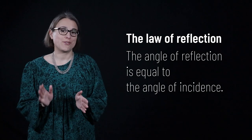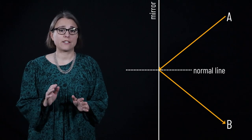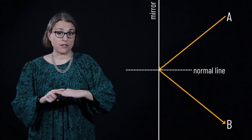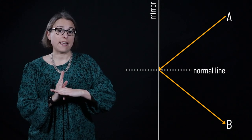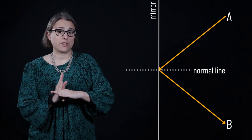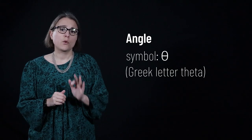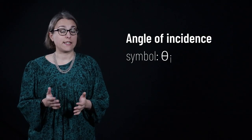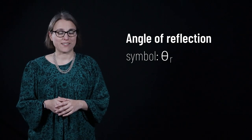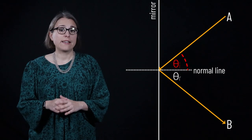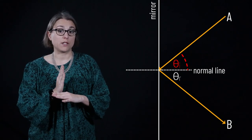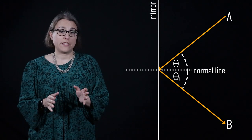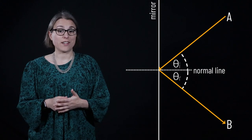This leads to the law of reflection: the angle of reflection is equal to the angle of incidence. When discussing reflection and refraction, we measure angles with respect to the normal line, which is positioned at a right angle to the mirror's surface. The symbol theta-i is used for the incident angle, and theta-r for the reflected angle. The angle of incidence is measured between the light ray and the normal line, and the angle of reflection equals this angle of incidence. Therefore, if you know the angle of incidence, you can determine the angle of reflection — they're equal!